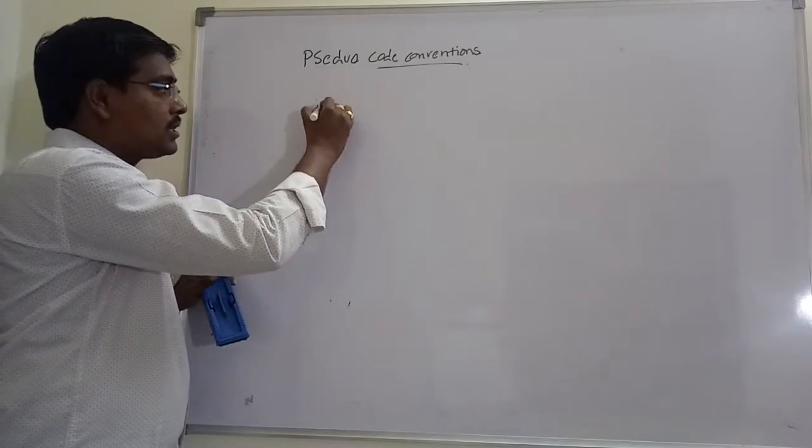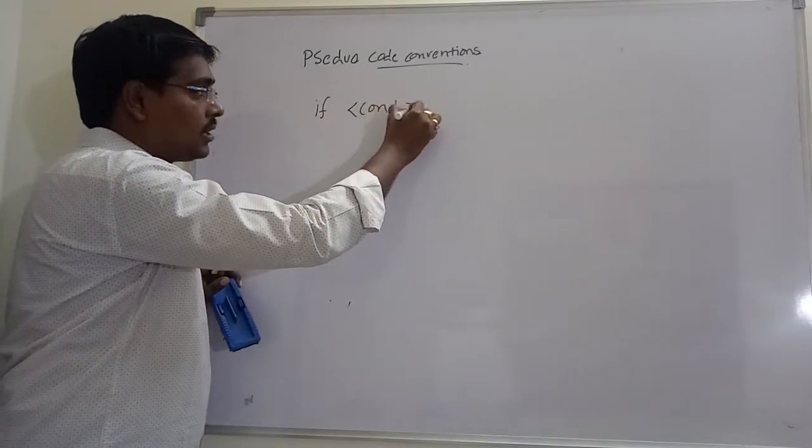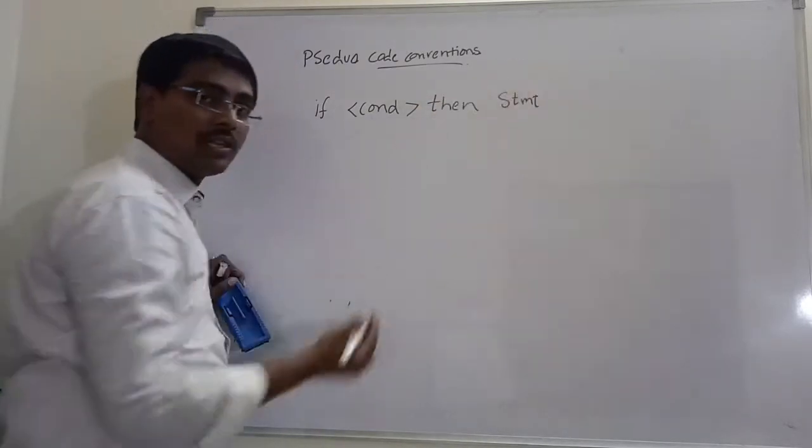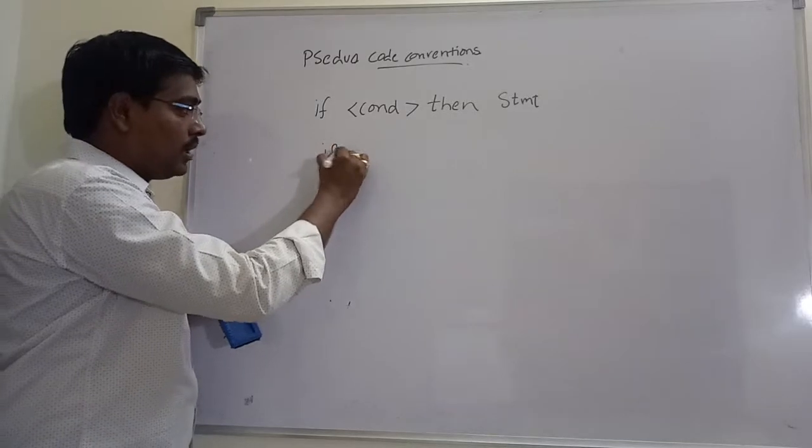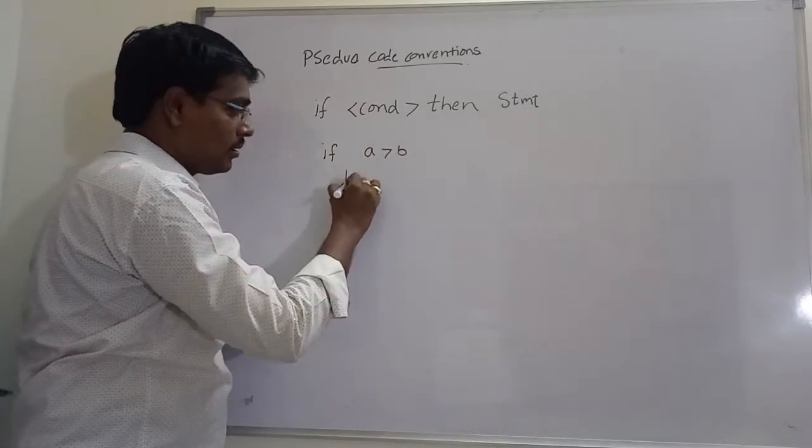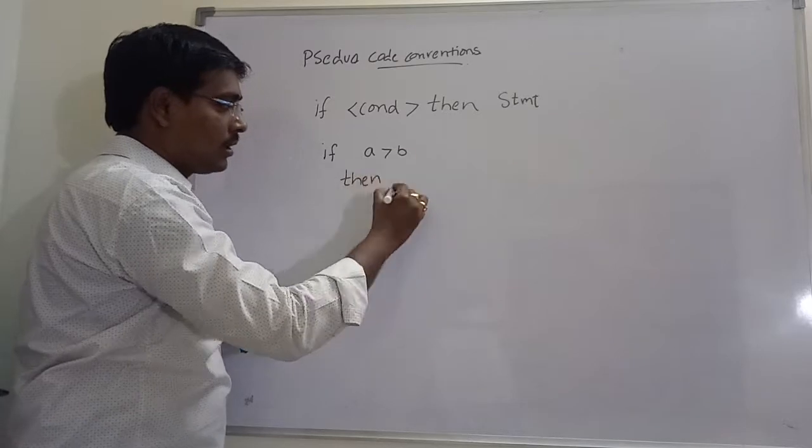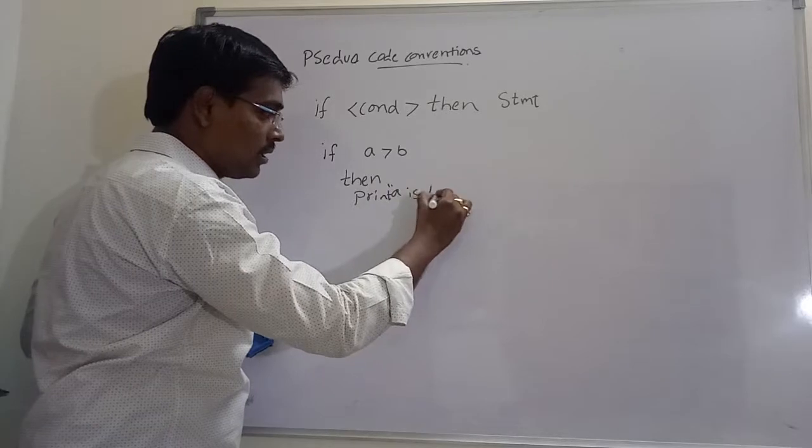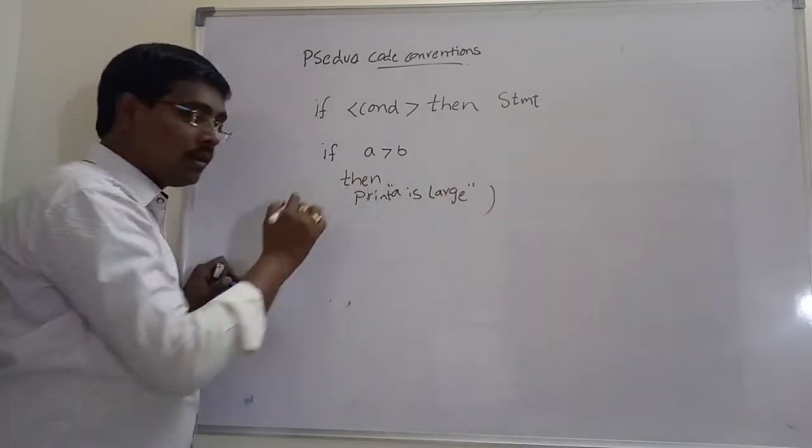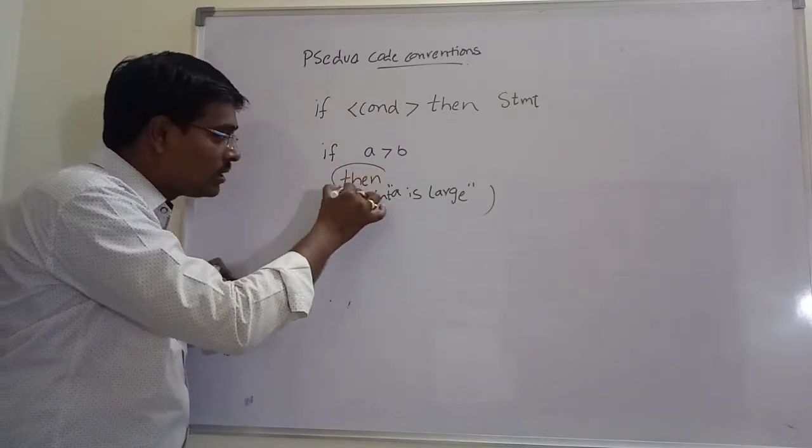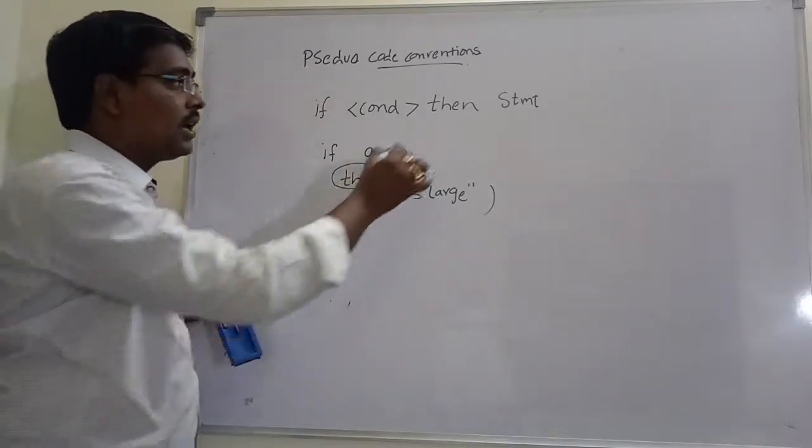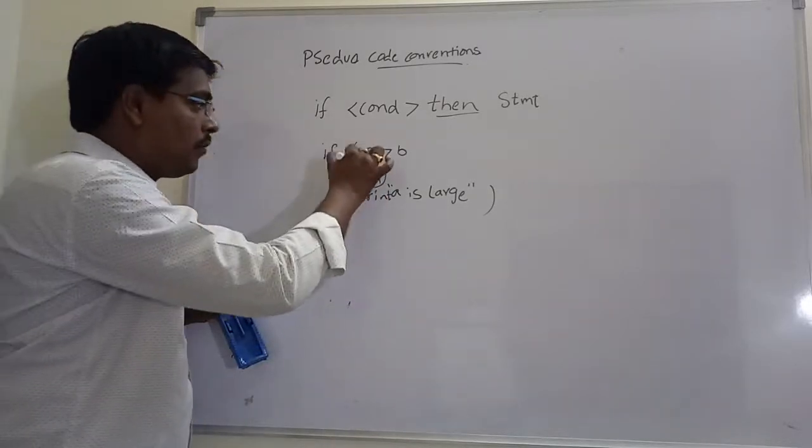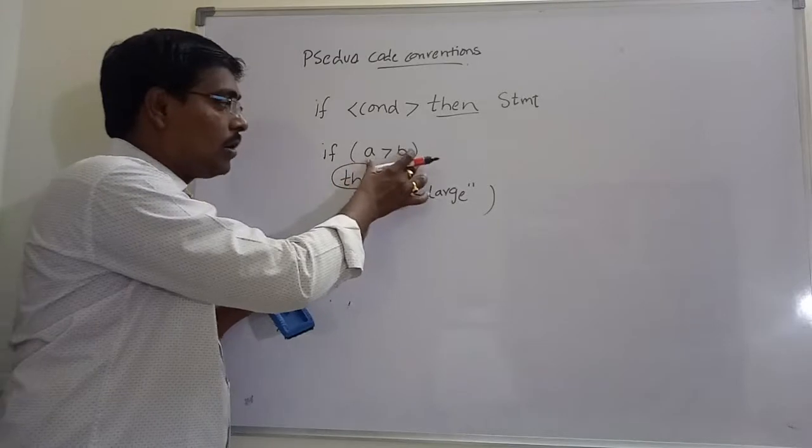Once these all operators are completed, next is decision. If statement is represented as: if condition then statement. For example, if A greater than B then print 'A is large'. So here we are using then statement. In normal programming languages we don't use then statement. In algorithm we are using then. There is no need of brackets.